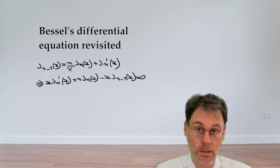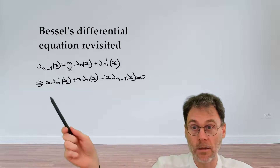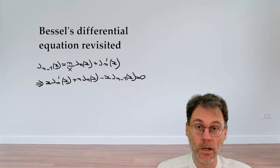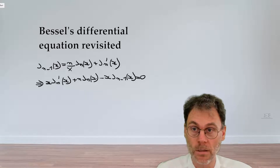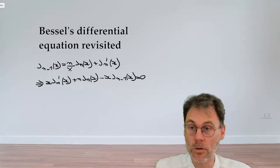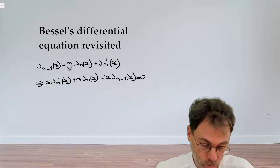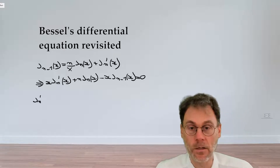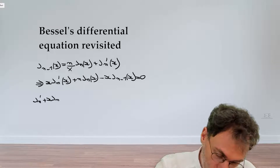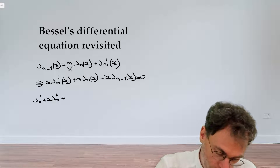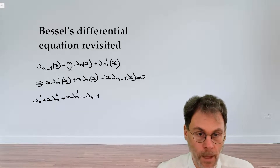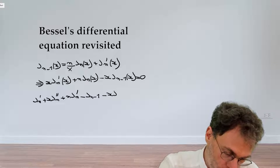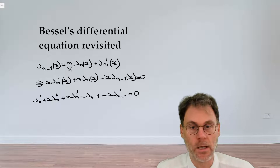That suggests the next course of action: take the derivative with respect to x of this expression. Working term by term using the product rule, we get: J_n'(x) + x J_n''(x) + n J_n'(x) - J_{n-1}(x) - x J_{n-1}'(x) = 0.